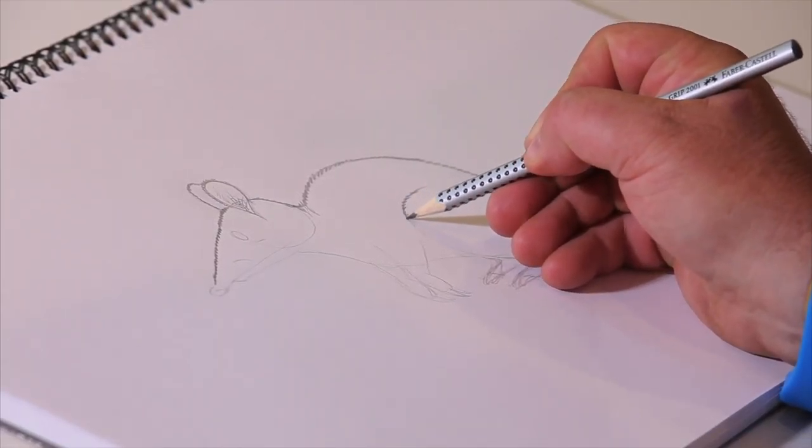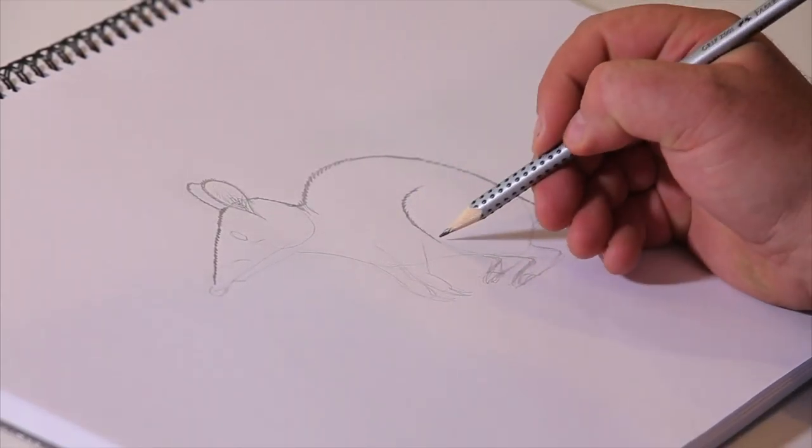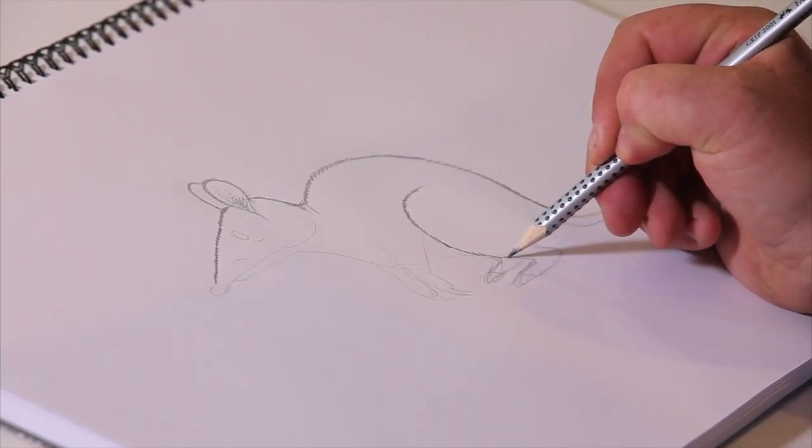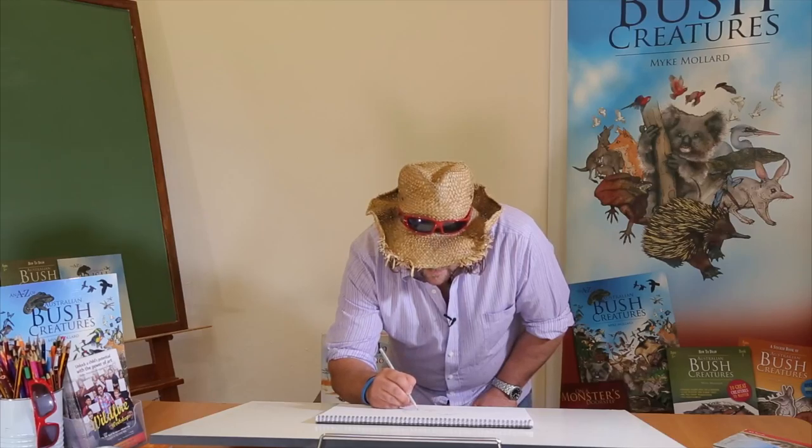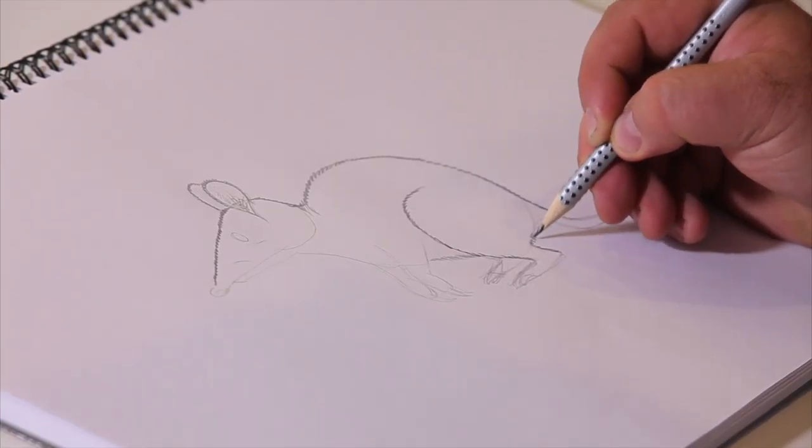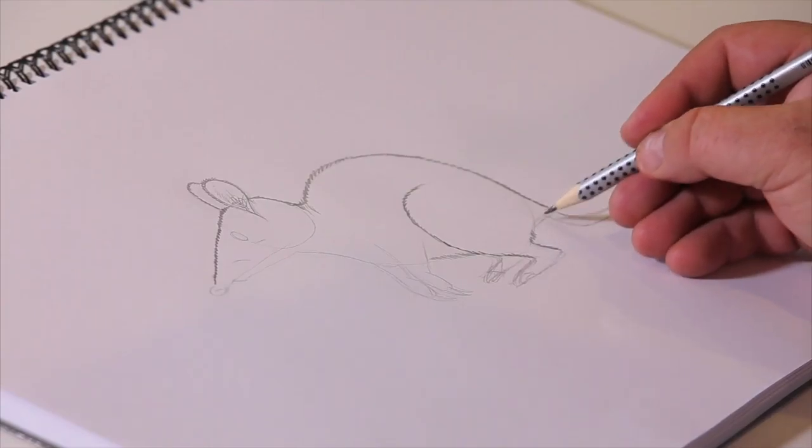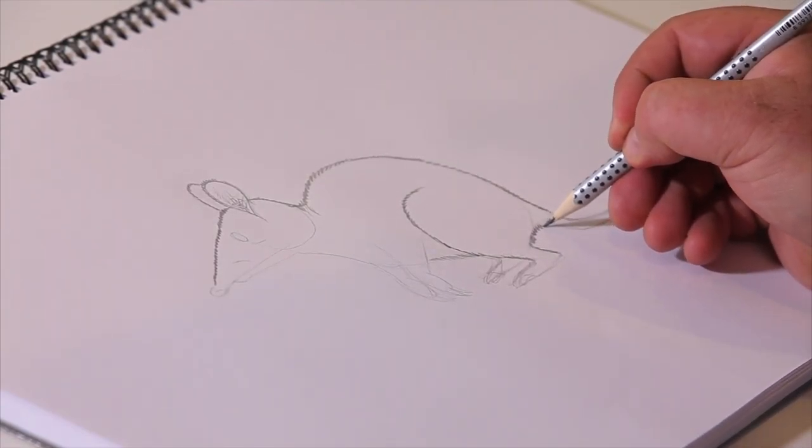As you can see, all the hairs follow his leg down. And under his tummy, it might be a bit fluffy. Now the back of his leg, follow it down. And then follow that fluff from in here to here. Back up there.